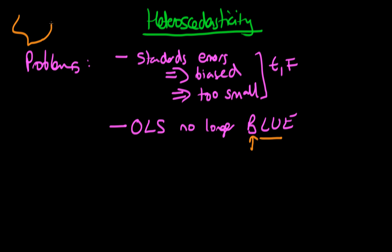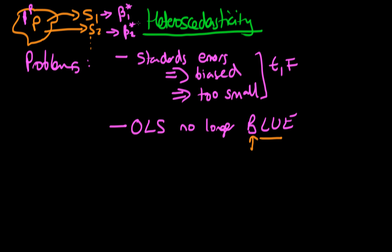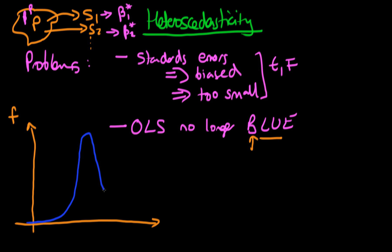If I have some population and take repeated samples — sample S1, sample S2, and so on — and on each of those samples I calculate an estimate of the population parameter beta (call it beta_p in the population), I get estimates beta-star-one, beta-star-two, and so on, using any particular estimator, of which OLS is one example. If I then draw a frequency graph of all those different estimates, I get what we call a sampling distribution. If least squares estimators are still linear and unbiased, the sampling distribution will be centred around the true population parameter beta_p.